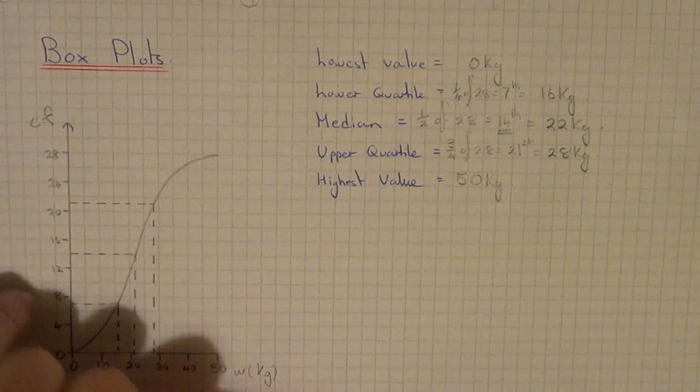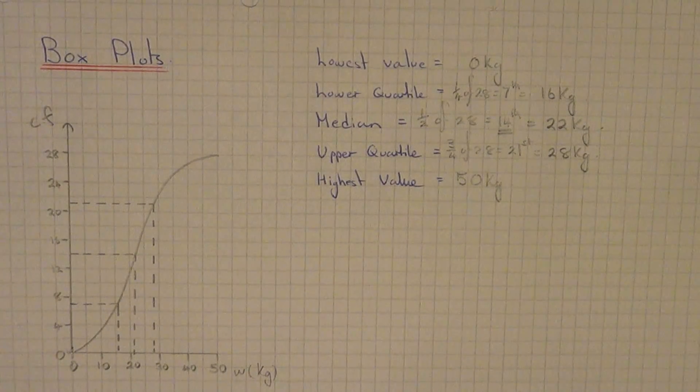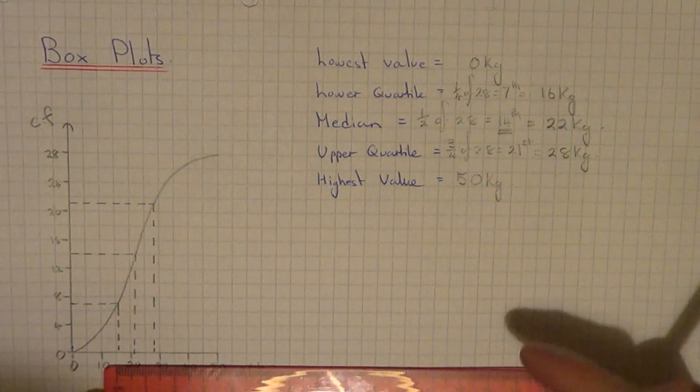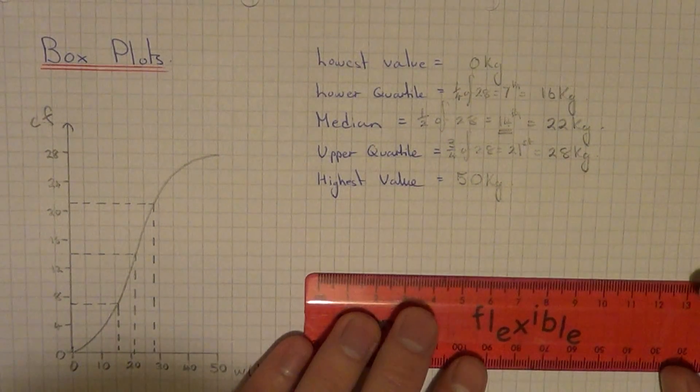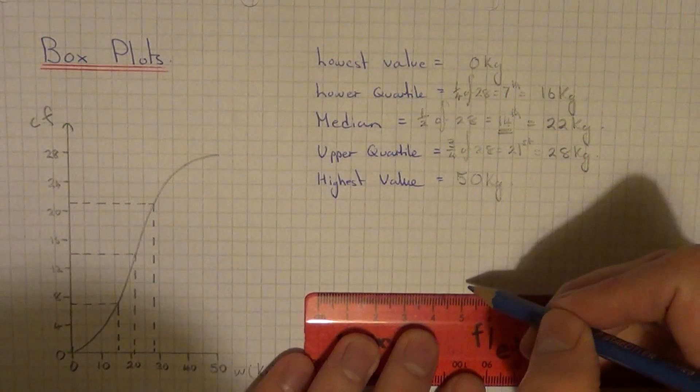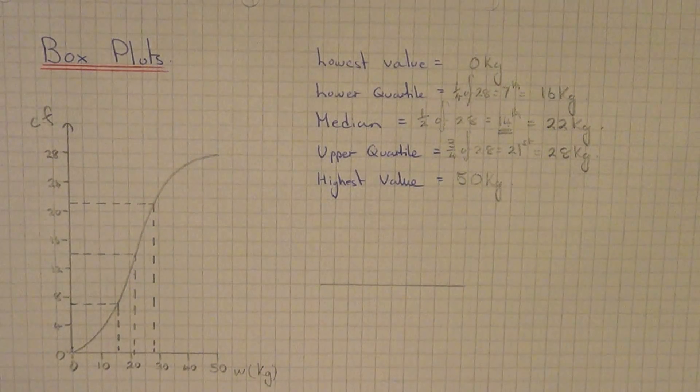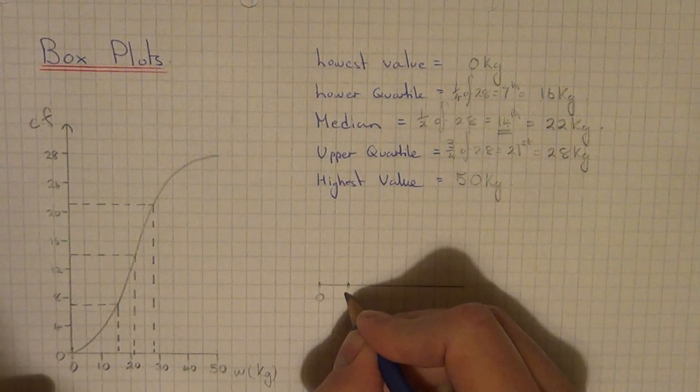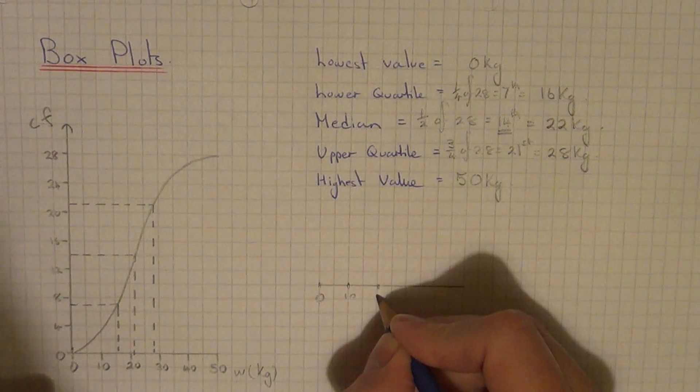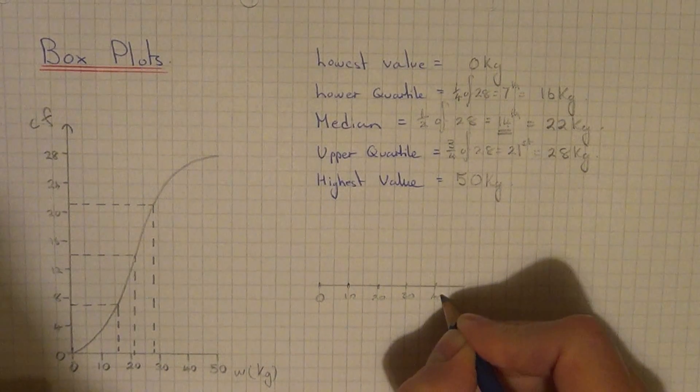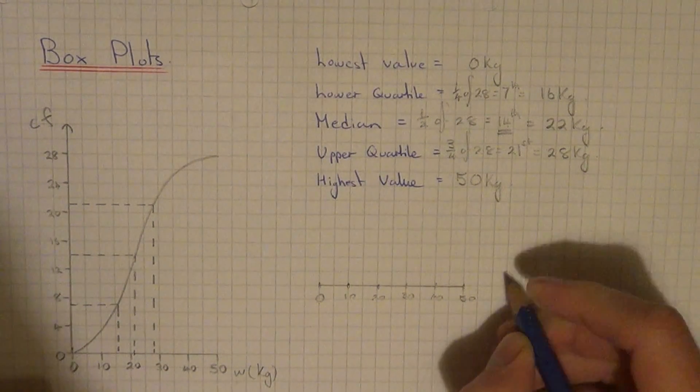So we've now got our five values for our box plot. So we've got to make the scale the same as the one on the cumulative frequency. So that was going along in tens. In the box plot there's only one scale so you only have a horizontal scale.